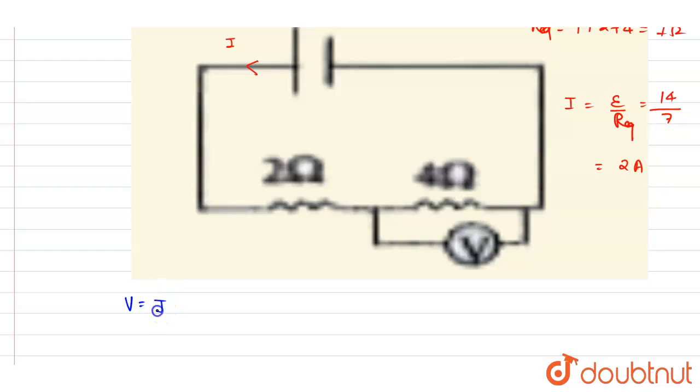V equals IR, and the resistance is four ohm. From this Ohm's law, you can just get the voltmeter reading that will be the potential drop across it. So it is eight volt, and this will be the answer of this question.